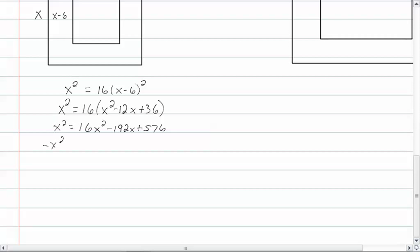Subtract x squared from both sides. We now have fifteen x squared minus one hundred and ninety-two x plus five hundred and seventy-six. And this whole thing equals zero.